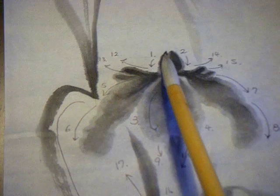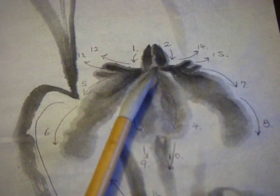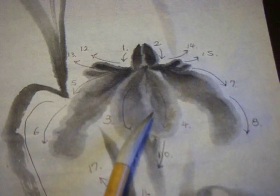First you start at the top of the flower. One, and then two. Then if you have enough water in your brush, you continue with three.